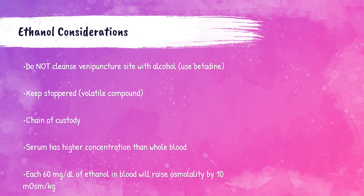Some drug screens come with something called a chain of custody — a paper trail of all the people who have had contact with the specimen from its collection to testing to where it is stored. This can be used in a court of law, so it's imperative for medical lab professionals to understand their laboratory's specific policies on chain-of-custody samples. For example, ethanol levels can have a chain of custody form, such as in a car accident case where alcohol may have been a contributing factor.